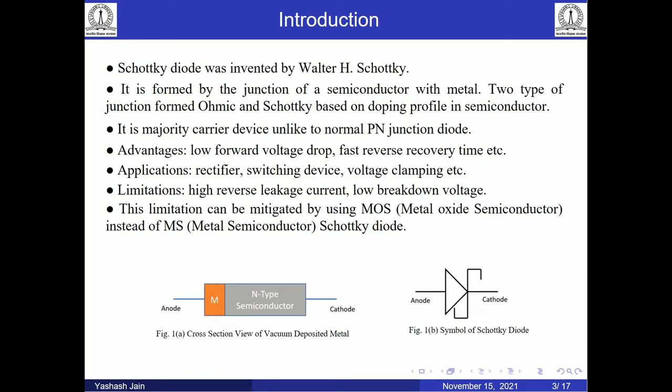Schottky diode was invented by German scientist Walter Schottky. It is a metal to semiconductor junction. It has two types of junction — Schottky and ohmic junction — based on the doping profile of the semiconductor. It is a majority carrier device, unlike the normal PN junction diode.